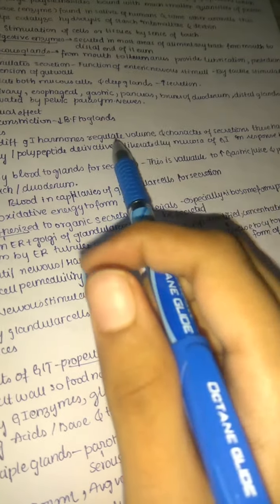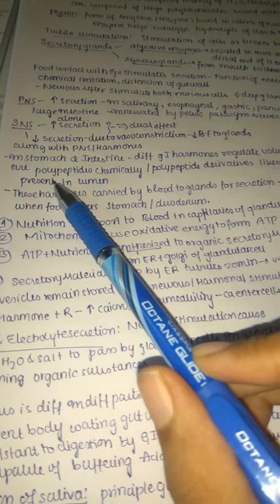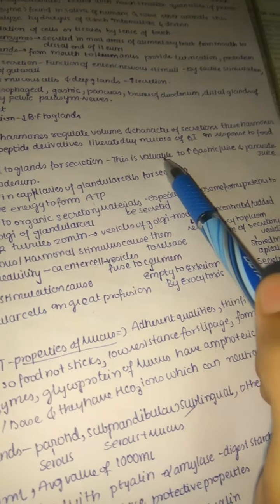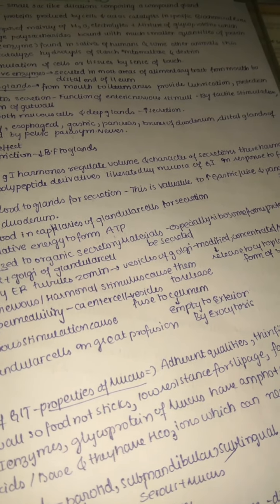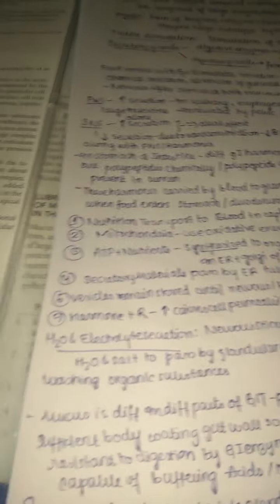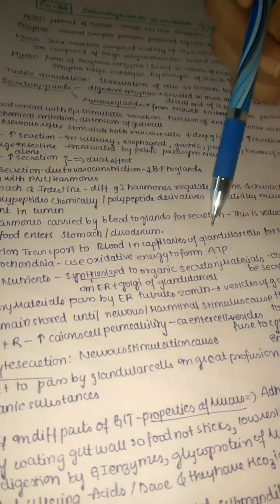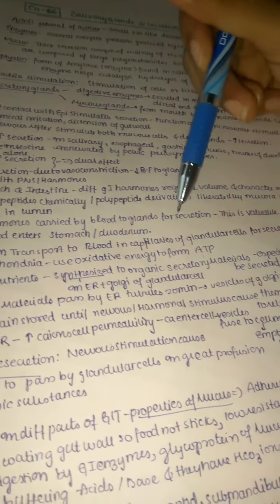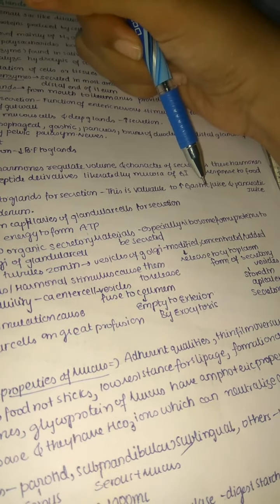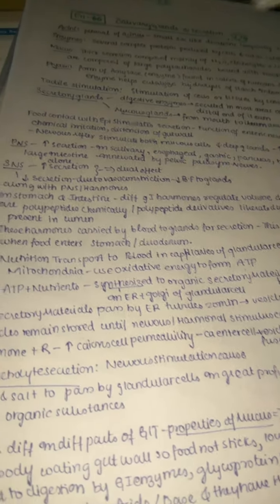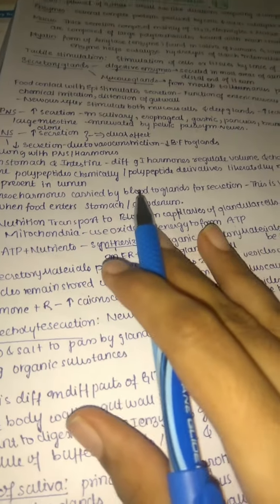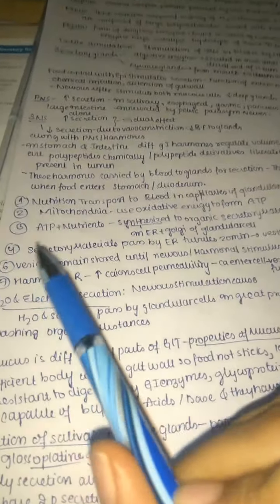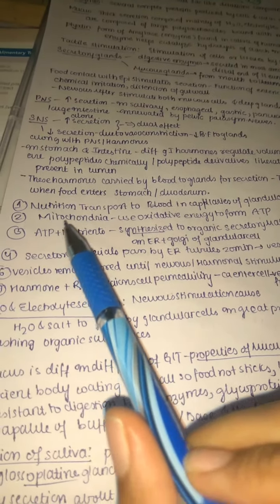GI hormones are mainly polypeptides or polypeptide derivatives, liberated by the mucosa of the GI tract in response to food present in the lumen. These hormones are carried by blood to the glands to stimulate secretion. This is valuable for increasing gastric juice and pancreatic juice when food enters the stomach or duodenum.